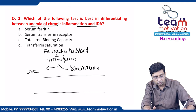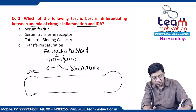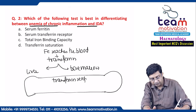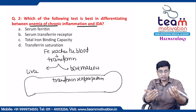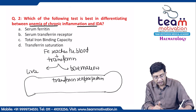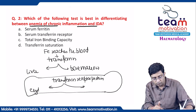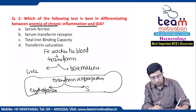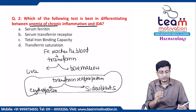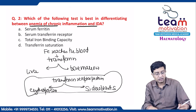In the bone marrow, transferrin is received by transferrin receptor protein. This protein takes iron from transferrin, and the iron is then used for erythropoiesis or stored in cells called sideroblasts.